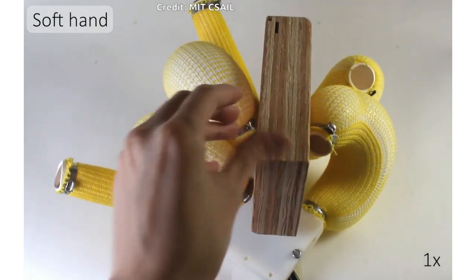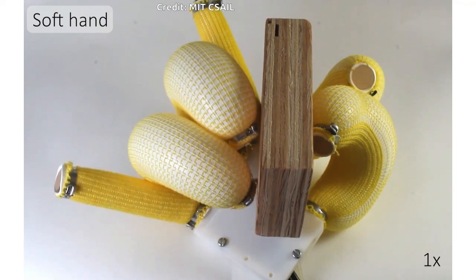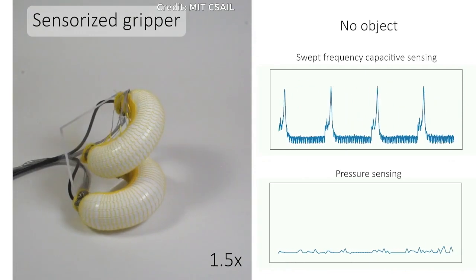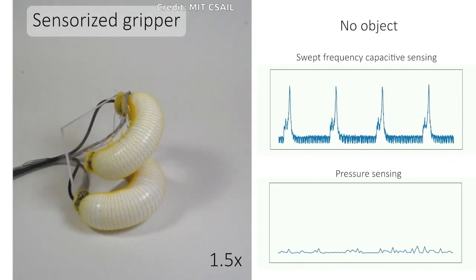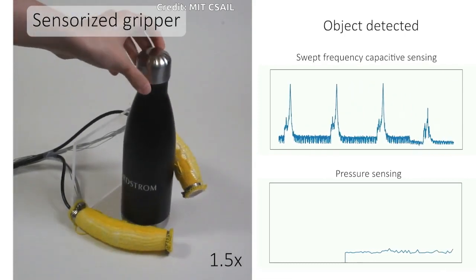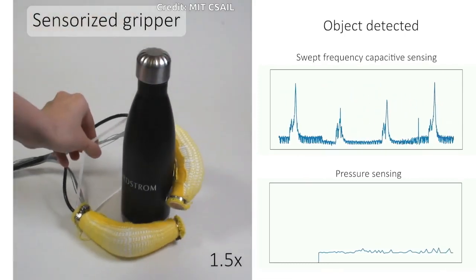The method can also be used to make an exoskeleton — wearable robotic units controlled by a computer that supplement human motion and restore locomotion and movement. To that end, the researchers made a sleeve that can help wearers bend their elbow, knee, or other body parts.